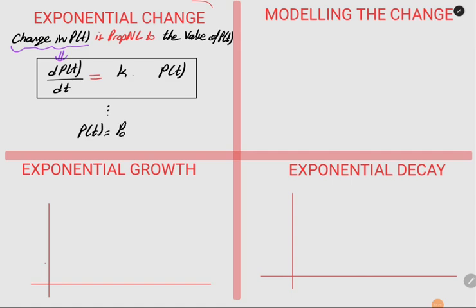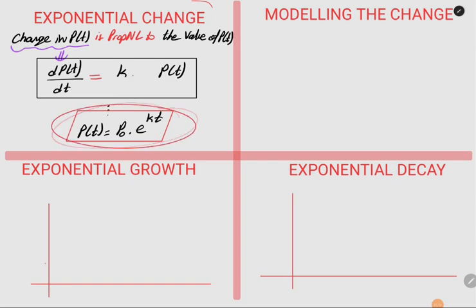We solved this differential equation and found that P(t) is equal to its initial value P₀ times e to the k times t. It doesn't matter if it is growth or decay — in both cases we obtain this formula. In exponential growth k is positive, in exponential decay k is negative, and if k equals zero we obtain a constant function with no change.